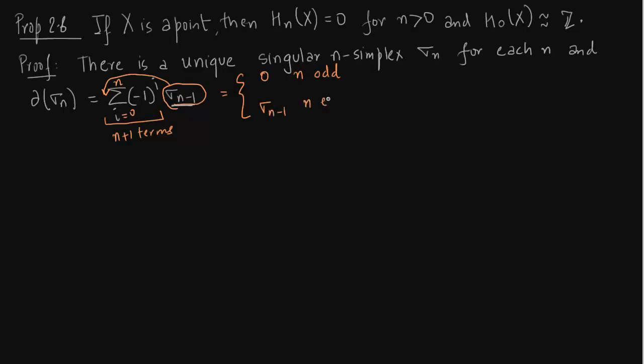You just skip σn-1. This is how the complex is going to look like. There is a unique singular n-simplex in every dimension.